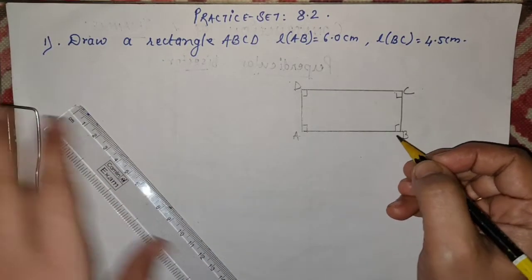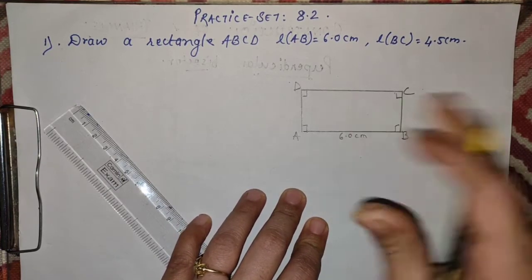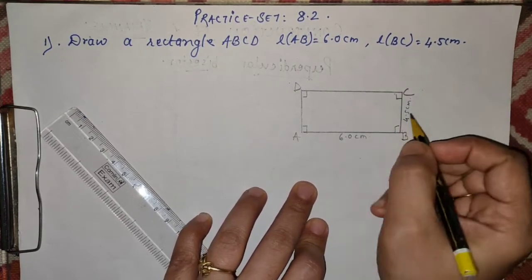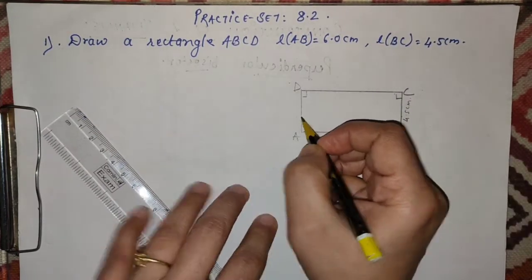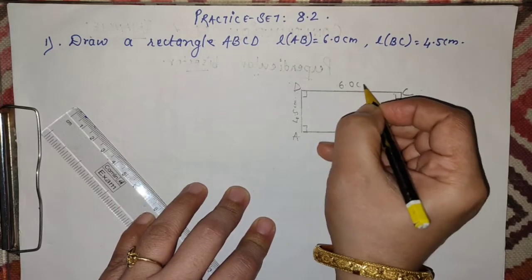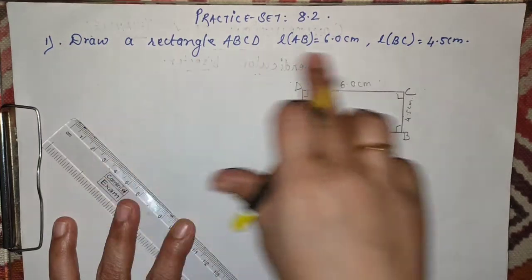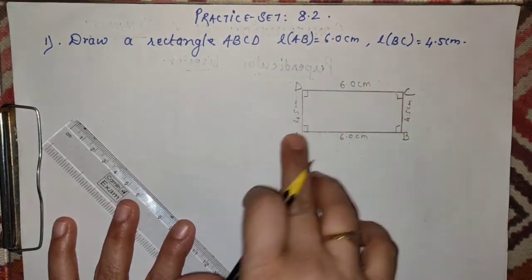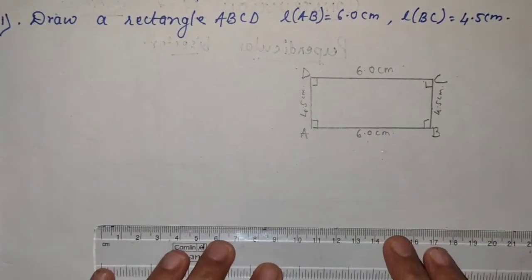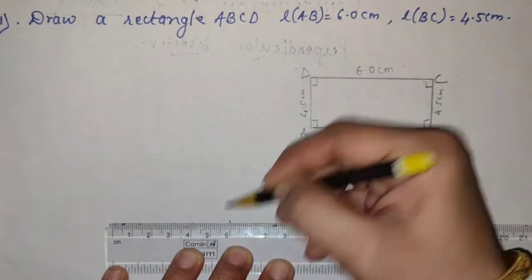हम exact measurement नहीं ले रहे because it is a rough diagram. We know all the angles are 90 degree — यह property है और इसलिए property याद करना बहुत जरूरी है। AB is 6.0, BC is 4.5. Now students, we know opposite sides are equal — तो यह भी 4.5 होगा, और यह 6.0 है तो यह भी 6.0 होगा। This is your rough diagram। Diagonal कुछ mention नहीं किया है, तो diagonal नहीं draw किया।